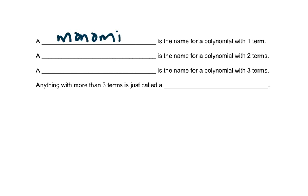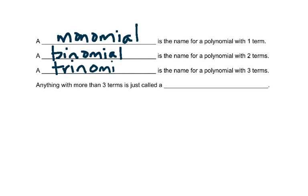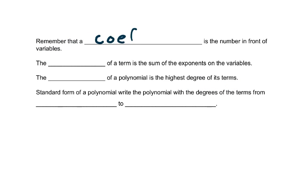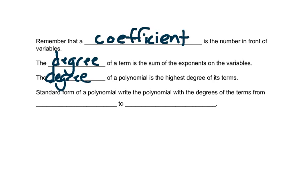A monomial is a name for a polynomial with one term. A binomial is a name for a polynomial with two terms. A trinomial is a name for a polynomial with three terms. Anything more than three terms is just called a polynomial. Remember that a coefficient is the number in front of the variables. The degree of a term is the sum of the exponents on the variables, and the degree of the polynomial is the highest degree of its terms. Standard form for a polynomial is to write the terms with degrees from biggest to smallest.